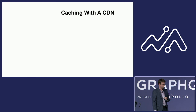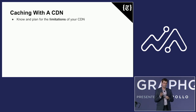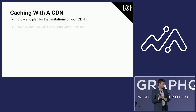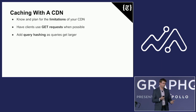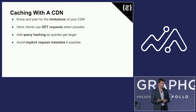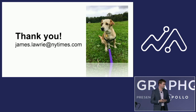Takeaways: Caching with a CDN is possible — you've got to know the limitations and plan for them, and be very knowledgeable about the CDN you're using. If at all possible, have your clients use GET requests, as most CDNs will work with GET requests out of the box. If queries exceed the limitations of your CDN, start using hashing and persisted queries. Avoid implicit request metadata if you can — it's much simpler if everything you need to calculate your GraphQL response is in the query itself. But if you can't avoid it, use Vary headers if at all possible. Thank you.